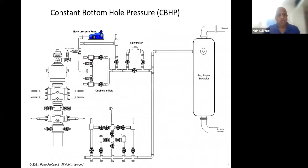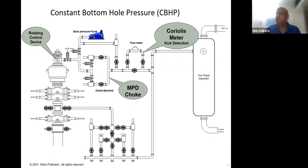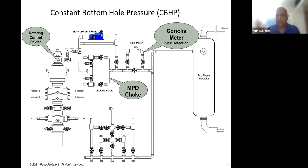This is a typical layout of constant bottom hole pressure, showing the main equipment. You have your rotating control head and choke manifold. The Coriolis meter is used for kick detection — it is a highly accurate flow meter that gives an indication of any influx. If gas or fluid is coming to surface, the Coriolis meter detects changes in density and flow rate. If there are losses, it detects a reduction in flow rate; if there is a gain, flow rate increases.